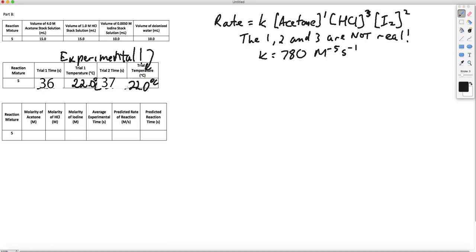The average time that goes down here, the average experimental time, would be 36.5 seconds. The next thing I want to do is figure out this predicted reaction rate. To get that, I do need to find these molarities.